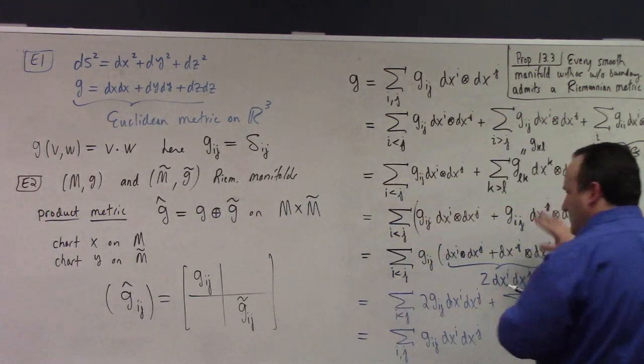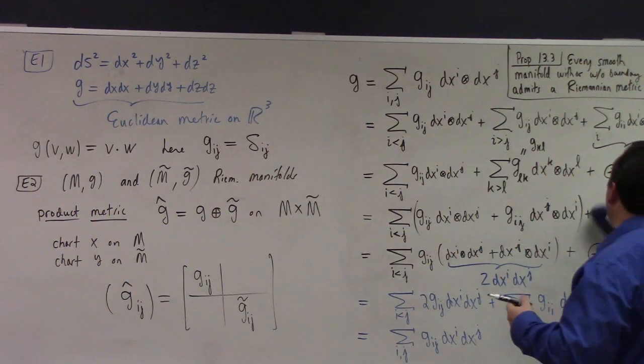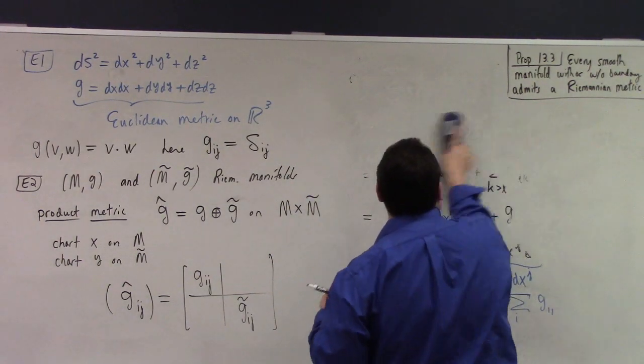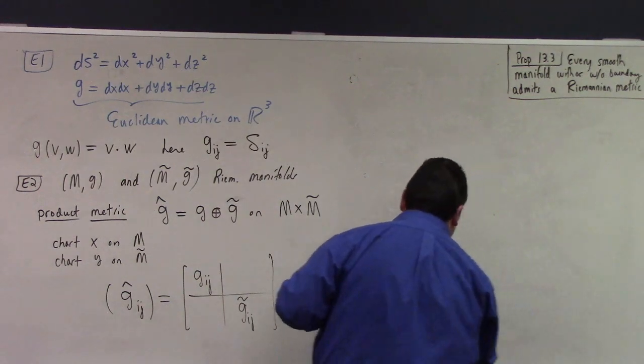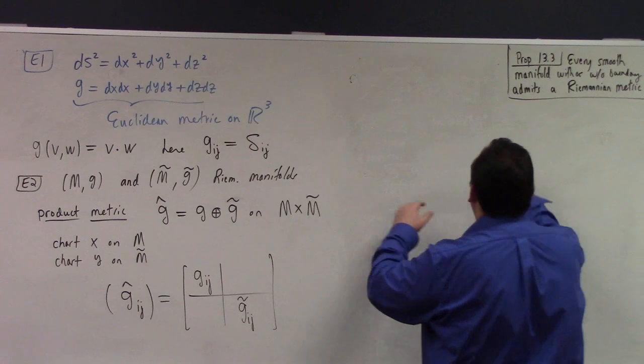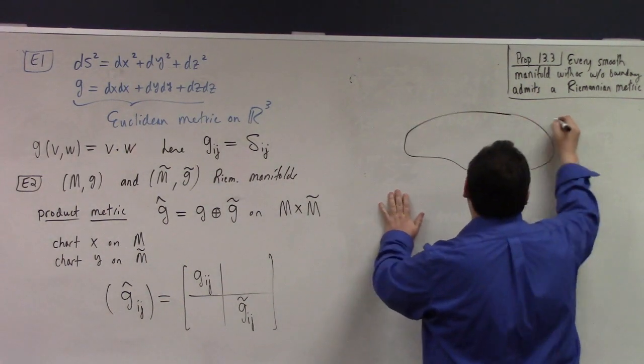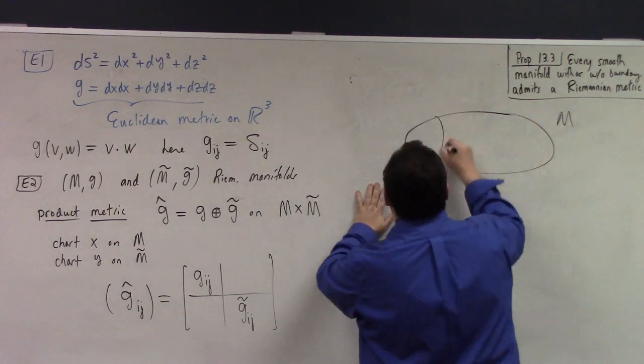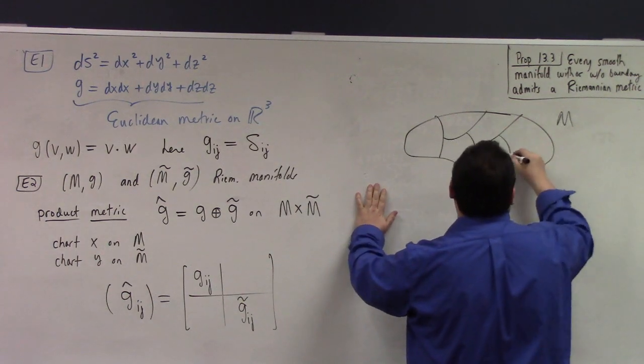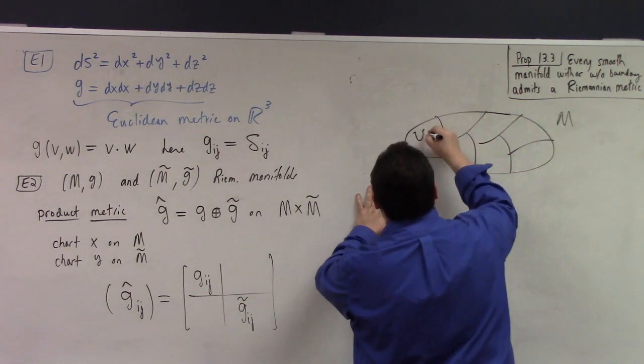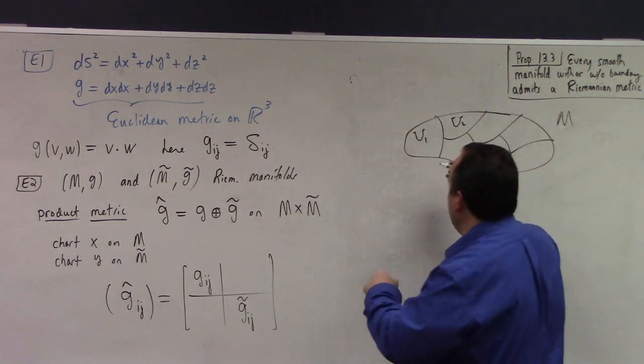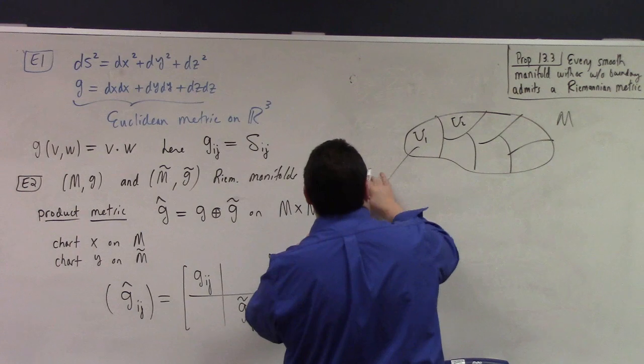For proposition 13.3, it says that every smooth manifold with or without boundary admits a Riemannian metric. So his proof is on page 329, and what he does is he starts by picking a manifold with or without boundary, and he chooses a covering by smooth coordinate charts. And then he says, in each coordinate domain, there is a Riemannian metric that you can get from G-alpha.